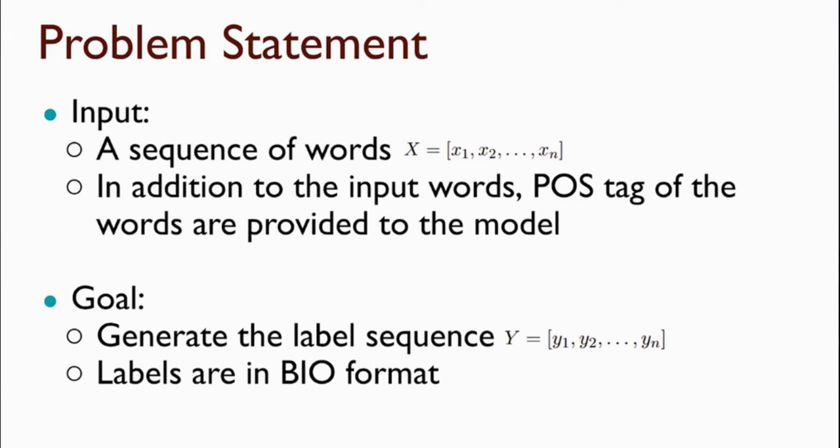Here is the formal definition of the task. We are given a sequence of words and, in addition to the words, we have the POS tags of the words in the sentence. Our goal is to predict the label sequence Y. As it is a sequence labeling problem, we use a BIO format in the labels to determine the boundaries of different semantic slots in the given sentence.